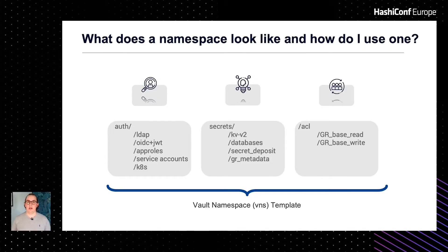In addition to the obvious KVv2 secret engine and database secret engine, we also created two additional secret engines. First, GR metadata. This endpoint stores owner information, application ID, and data integrity and classification status. This allows us to use an external tool called VaultSat to periodically query all of the namespaces inside Vault to understand who owns them, what they're used for, and what application they are serving.